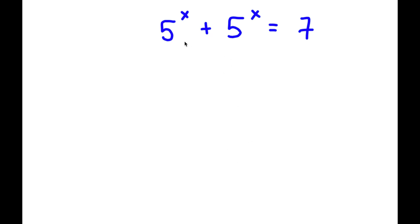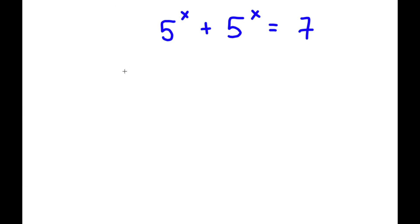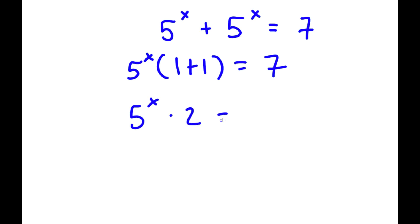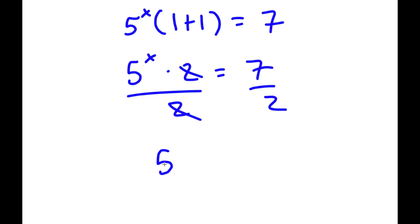In this problem, I have 5 to the power of x plus 5 to the power of x is equal to 7. The first thing I'm going to do is factor out 5 to the power of x from the left-hand side. So I have 5 to the power of x times 1 plus 1 is equal to 7. One plus 1 is 2, so I have 5 to the power of x times 2 is equal to 7. Dividing both sides by 2, I get 5 to the power of x is equal to 7 over 2.